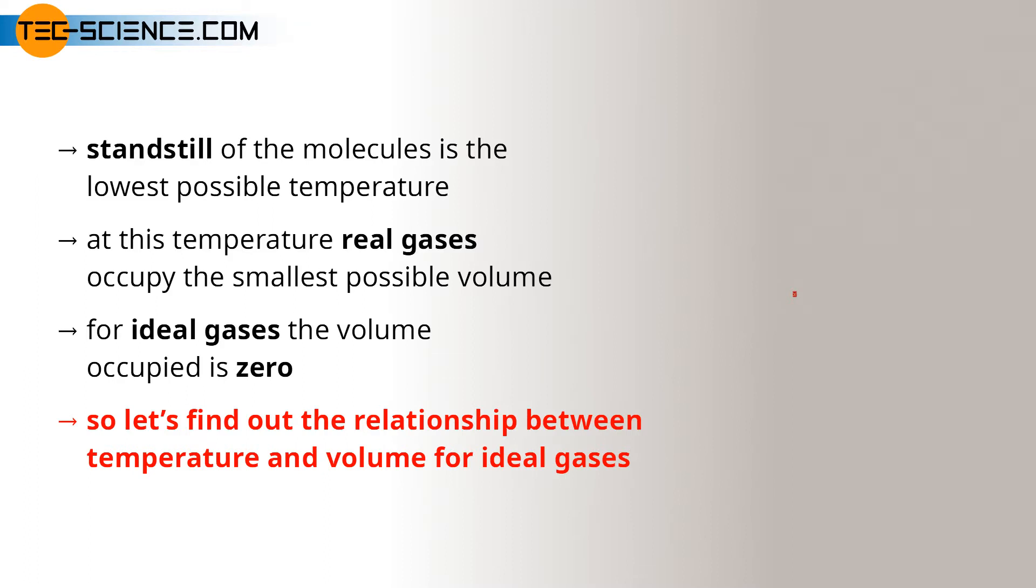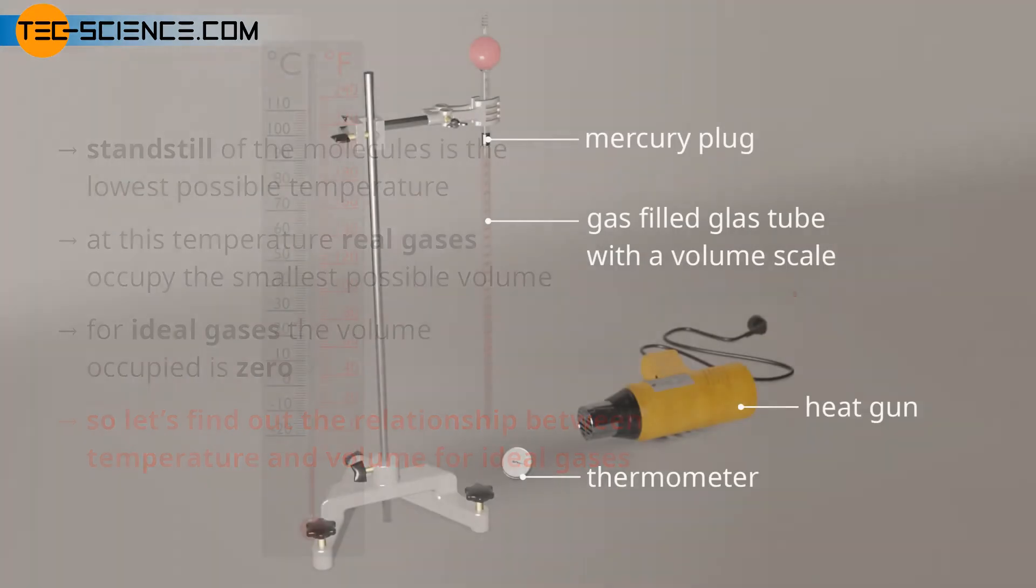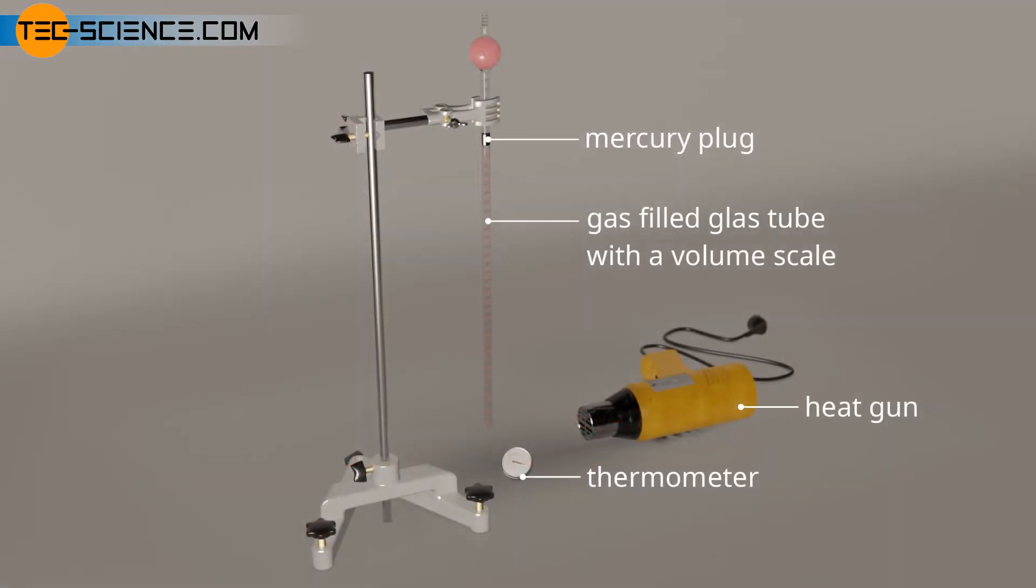The examination of this temperature-volume relationship can be done with a glass tube containing helium, or in the simplest case air. The glass tube is sealed with a plug of mercury to prevent the gas from escaping while at the same time allowing it to expand and contract.